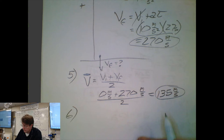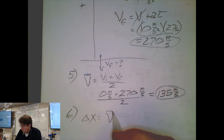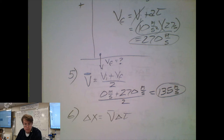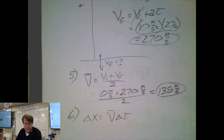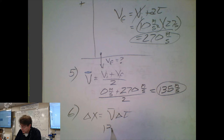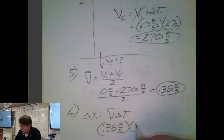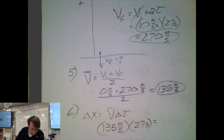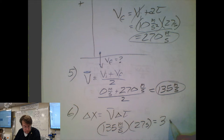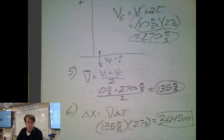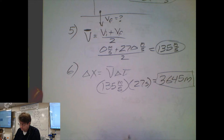Problem six: how far did it fall during this time? We'll use average velocity times time. With uniform acceleration, this equation is valid. Our average velocity of 135 meters per second times the 27 seconds of fall gives a displacement of 3,645 meters — which is about 3.6 kilometers. That's a very long fall.